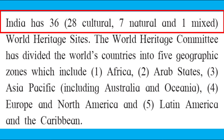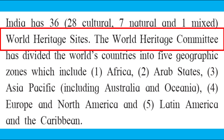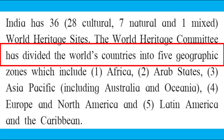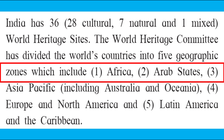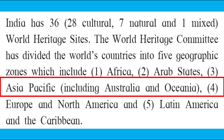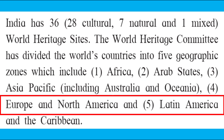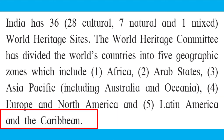India has 36 World Heritage Sites: 28 cultural, 7 natural, and 1 mixed. The World Heritage Sites organization has divided the world's countries into five geographic zones which include: 1. Africa, 2. Arab States, 3. Asia Pacific including Australia and Oceania, 4. Europe and North America, and 5. Latin America and the Caribbean.